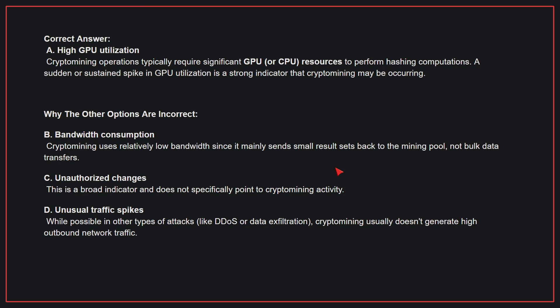Crypto mining operations typically require significant GPU or CPU resources to perform hashing computations. A sudden or sustained spike in GPU utilization is a strong indicator that crypto mining might be occurring.